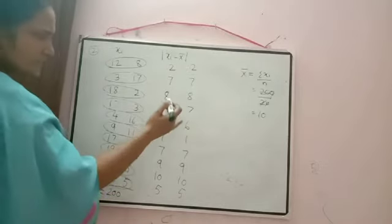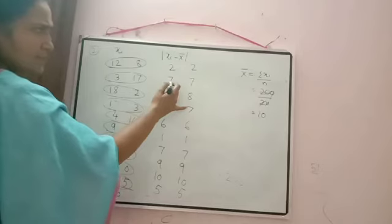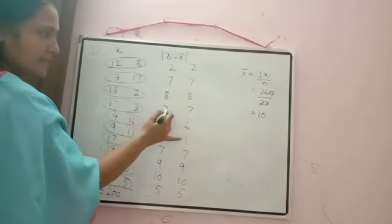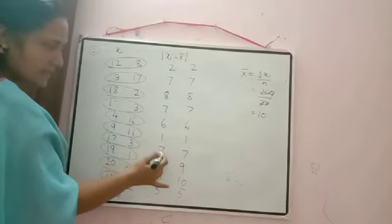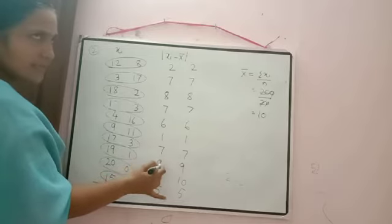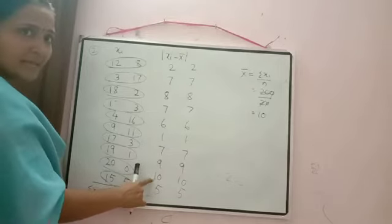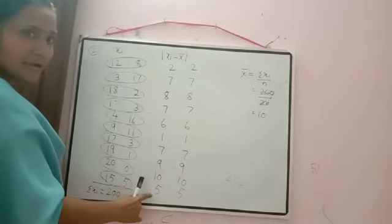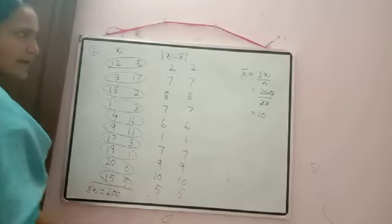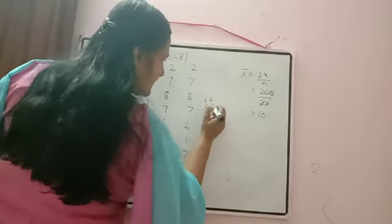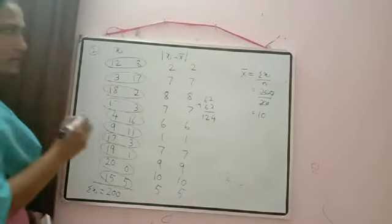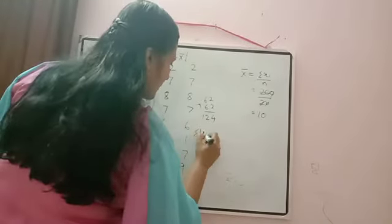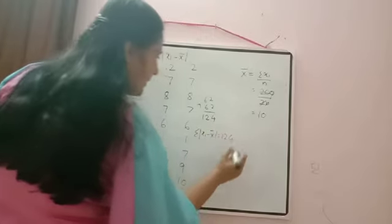Now add all the deviations. First ten: 2+7=9, +8=17, +17+7=24, +6=30, +1=31, +7=38, +9=47, +10=57, +5=62. The second set of ten is symmetric and also sums to 62. So Σ|xᵢ − x̄| = 62 + 62 = 124.